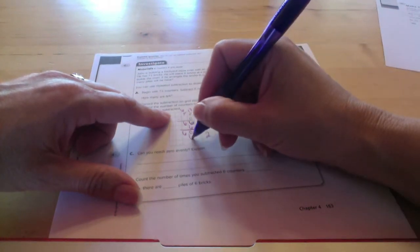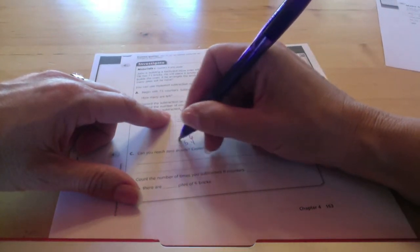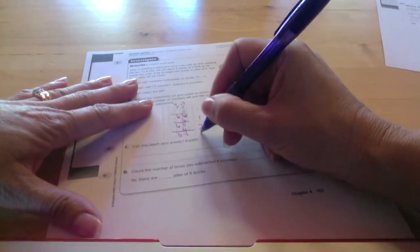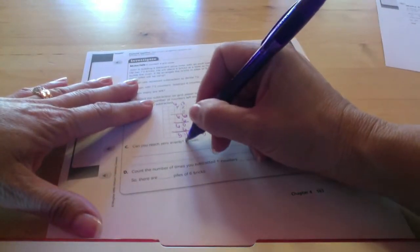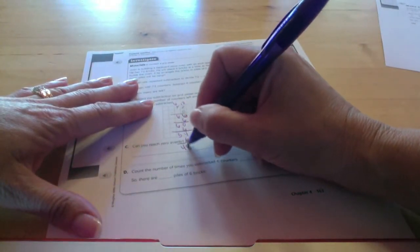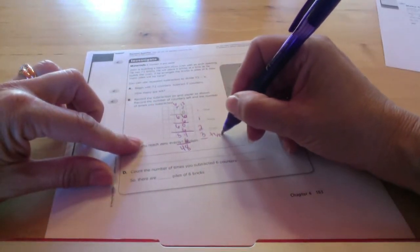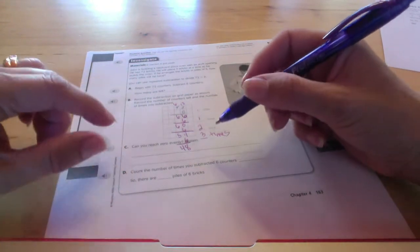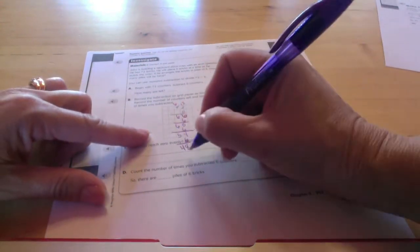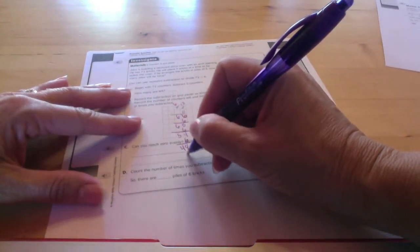And then the next time, we'll subtract six again, and we'll end up with 54. If we subtract six again, we'll end up with 48, and we can keep doing that until we end up with zero at the bottom. So I'm just going to go ahead and keep doing it here.